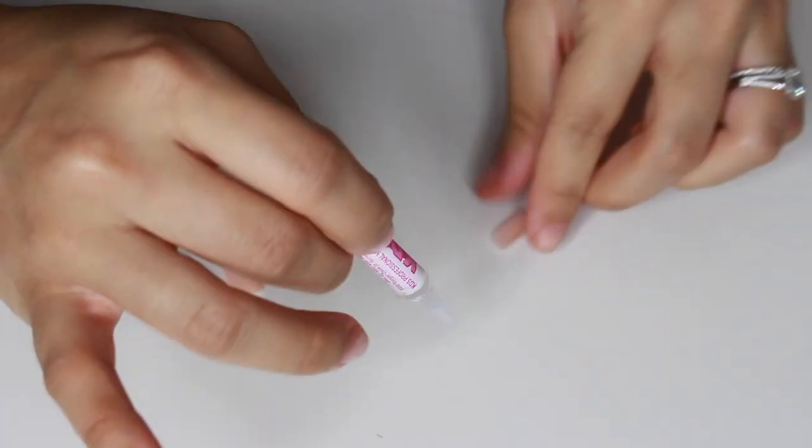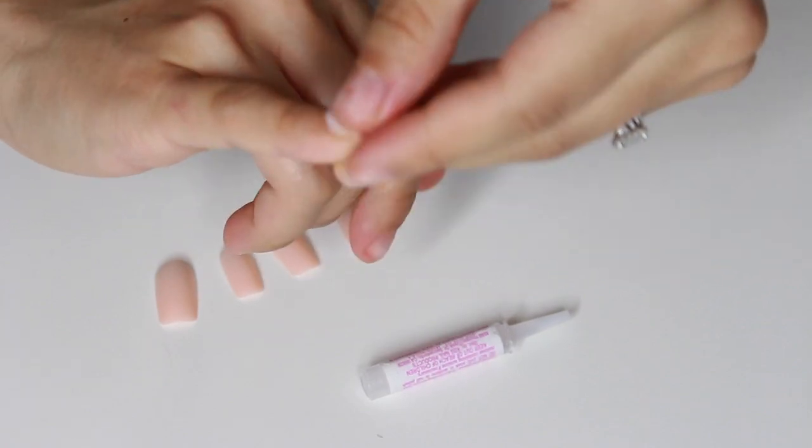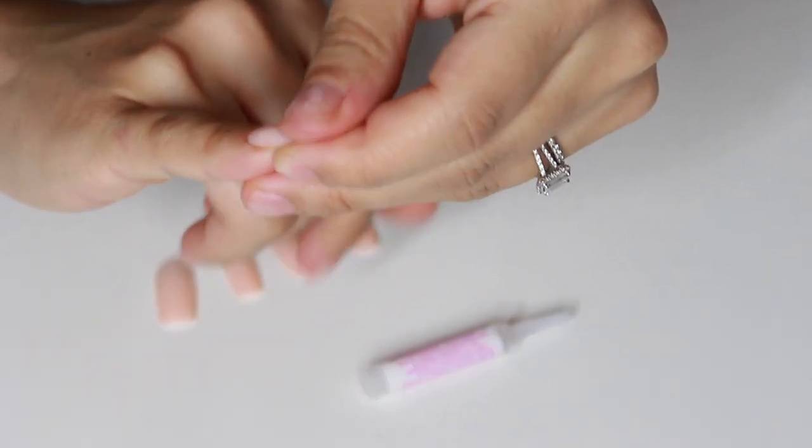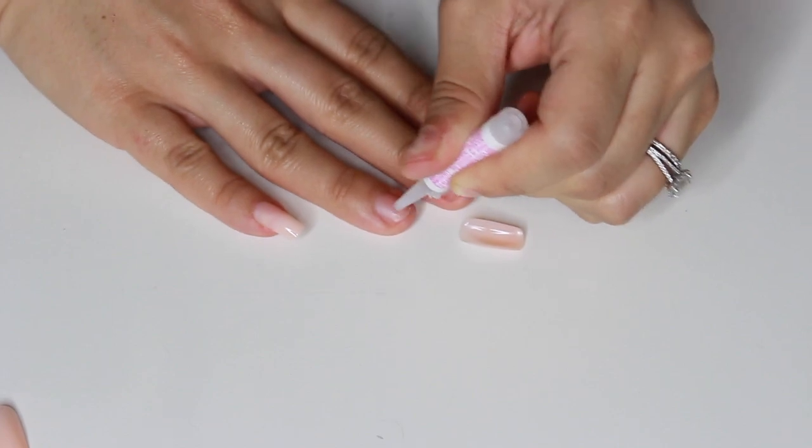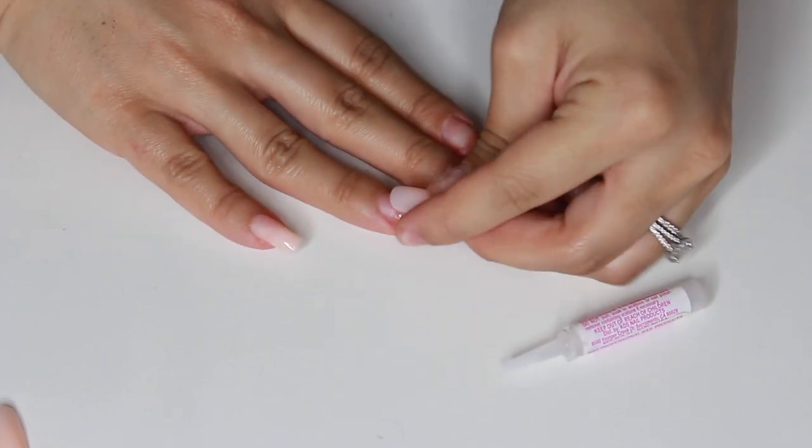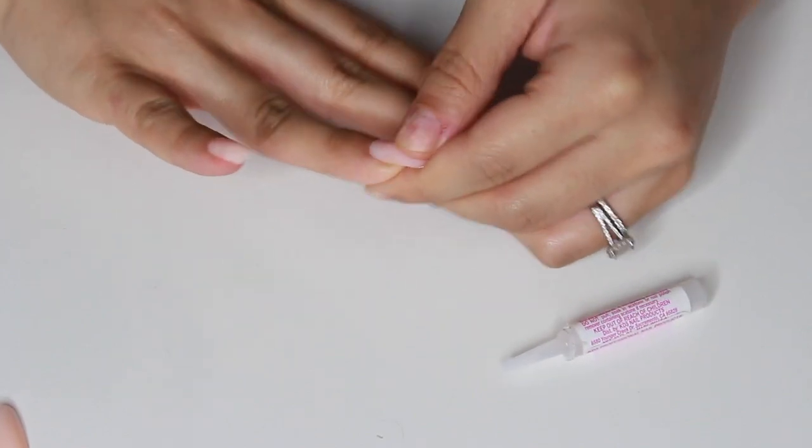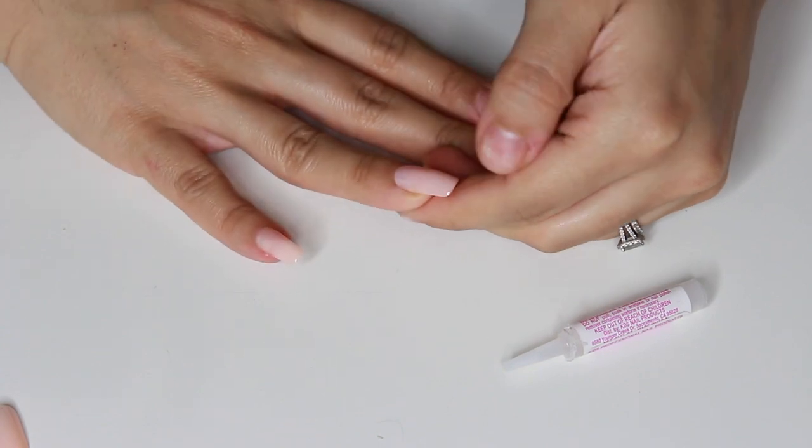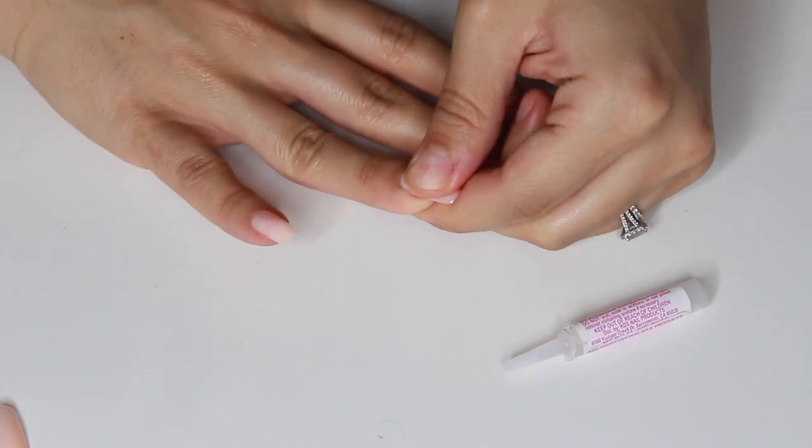Now we're going to start gluing our nails. I'm taking the glue that it came with. Of course you can use any other glue, but I found this glue works pretty good. I'm placing some on my nail and some on the nail itself, and then you're just going to press it down.